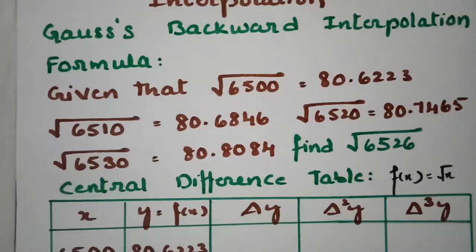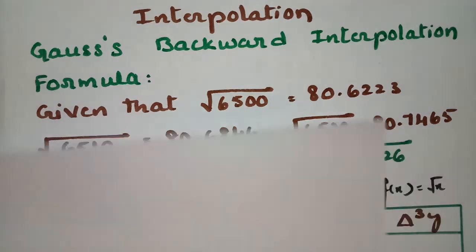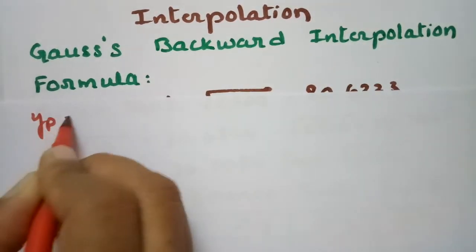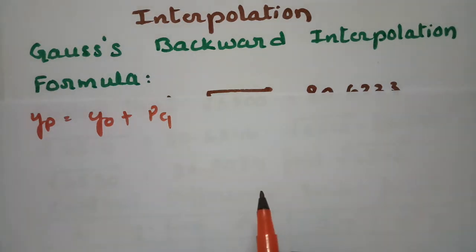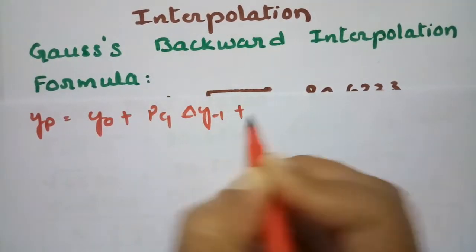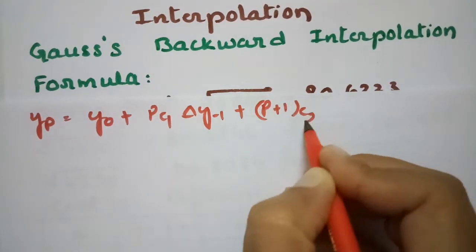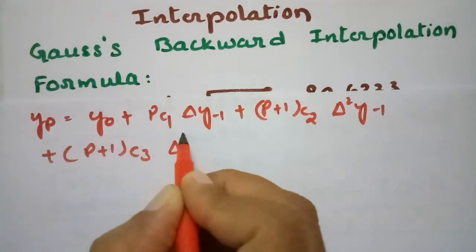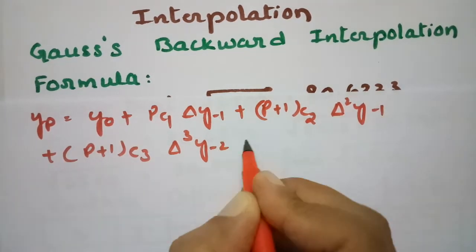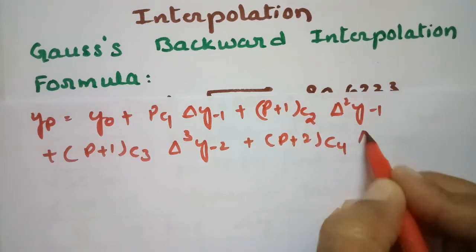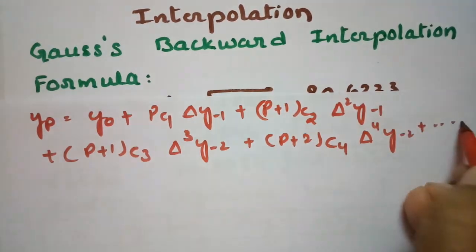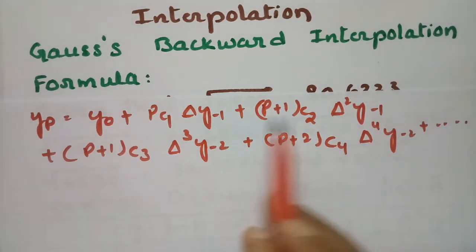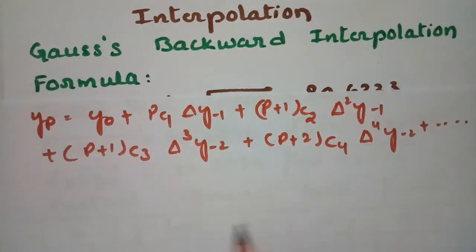Now using Gauss's backward interpolation formula: yp = y₀ + p·C₁·Δy₋₁ + (p+1)C₂·Δ²y₋₁ + (p+1)C₃·Δ³y₋₂ + (p+2)C₄·Δ⁴y₋₂ + ... Notice there is a single y₀ and single p term, then p+1 appears for two terms, p+2 for two terms, and so on; similarly y₋₁ appears twice, y₋₂ appears twice.